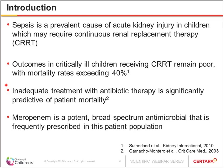The outcomes in this population — critically ill children who are receiving CRRT — are poor, with mortality rates exceeding 40%, and inadequate treatment with antibiotic therapy is predictive of patient mortality.